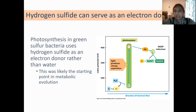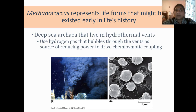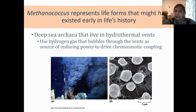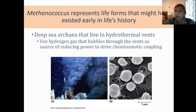The ability to utilize hydrogen sulfide as an electron donor to charge the system and make energy in the form of NADPH — not as efficient as ATP but still usable energy — may reflect how early metabolism started. Methanococcus is another example, surviving in hydrothermal vents at very high temperatures in a hostile environment with low oxygen. These organisms use hydrogen gas bubbling through the vents as a way to reduce their chemiosmotic coupling.